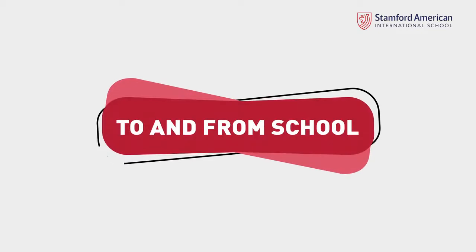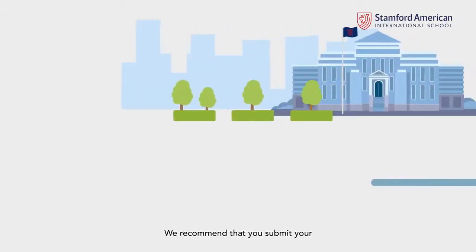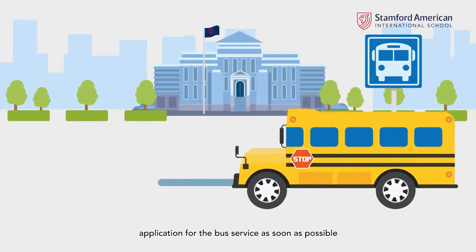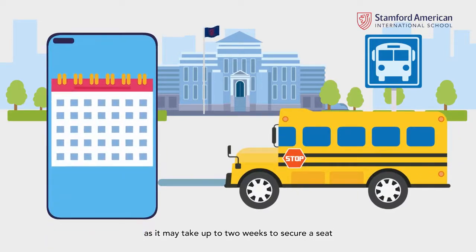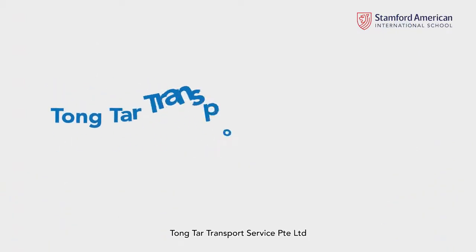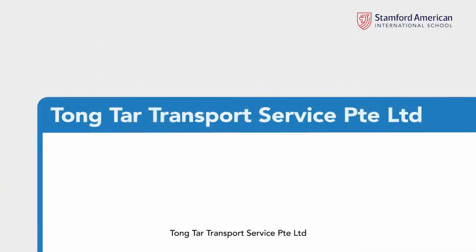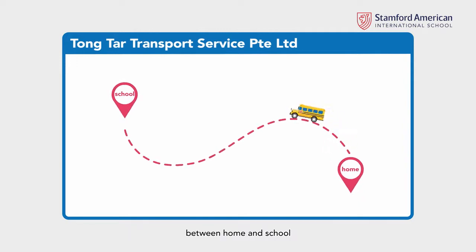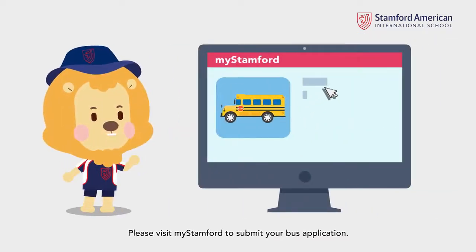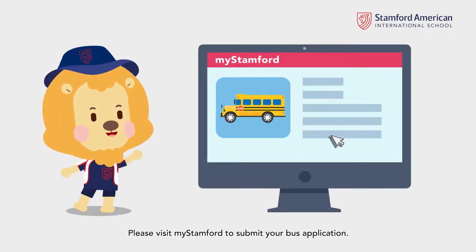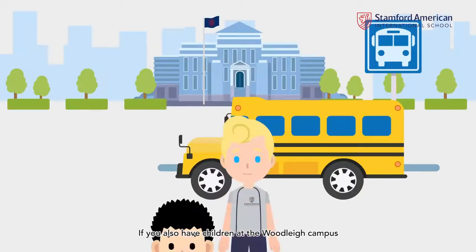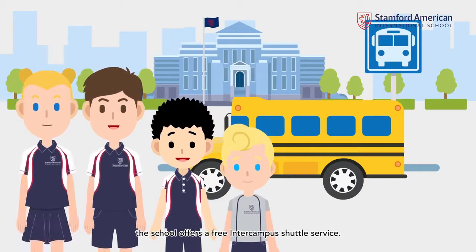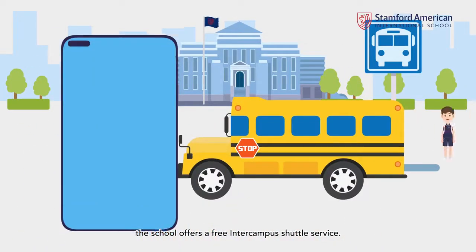To and from school. We recommend that you submit your application for the bus service as soon as possible, as it may take up to two weeks to secure a seat on the bus. Tongtar Transport Service has been specifically selected for door-to-door transport between home and school for our Early Learning Village campus. Please visit MyStamford to submit your bus application. If you also have children at the Woodlake campus, the school offers a free inter-campus shuttle service.